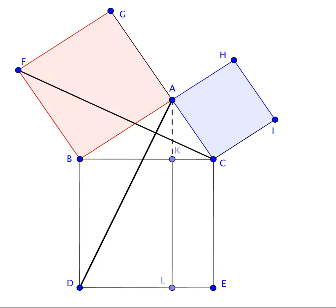The angles CBD and FBA are both right angles. Therefore, the angle ABD equals the angle FBC, since both are the sum of right angle and angle ABC. Since AB is equal to FB and BD is equal to BC, triangle ABD must be congruent to triangle FBC.